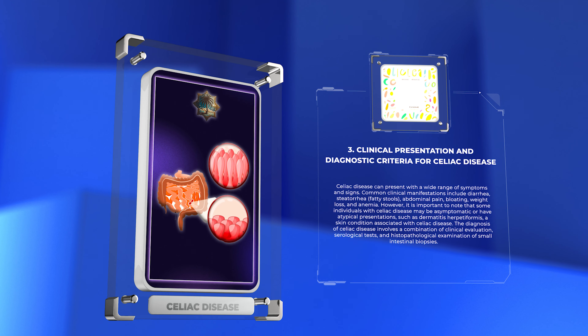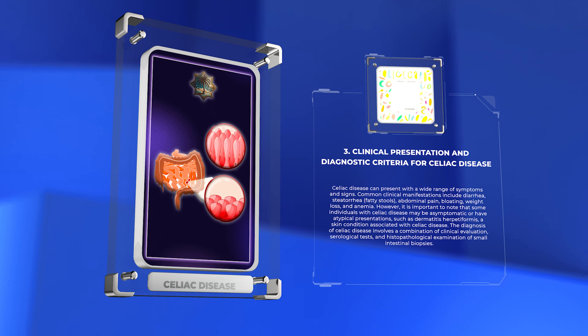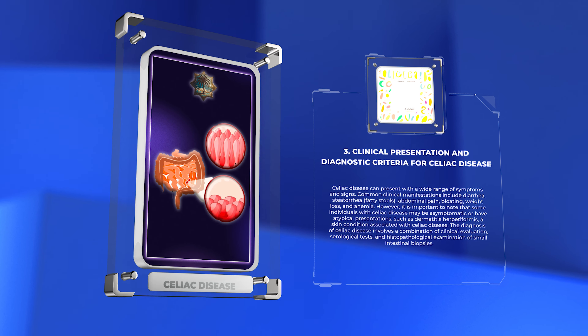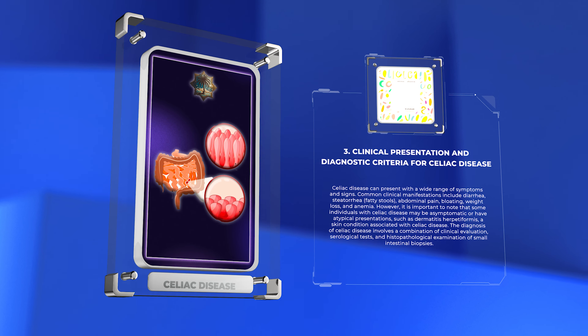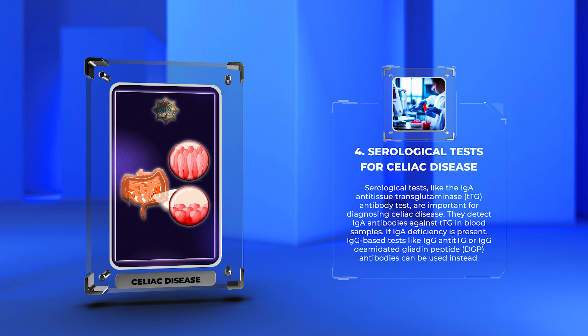The diagnosis of celiac disease involves a combination of clinical evaluation, serological tests, and histopathological examination of small intestinal biopsies. Serological tests, like the IgA anti-tissue transglutaminase (T-TG) antibody test, are important for diagnosing celiac disease. They detect IgA antibodies against T-TG in blood samples.